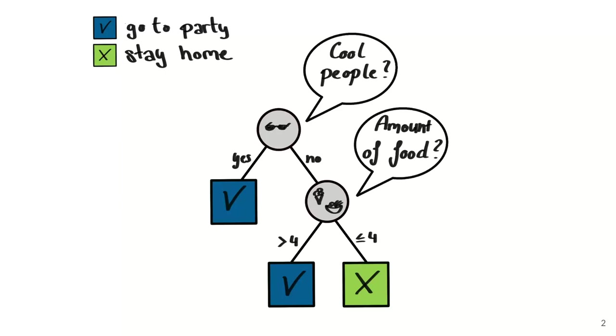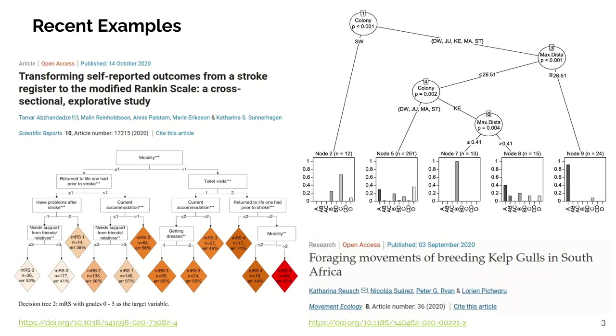When we use decision trees in research, then we usually use trees that create the decisions in a data-driven way.